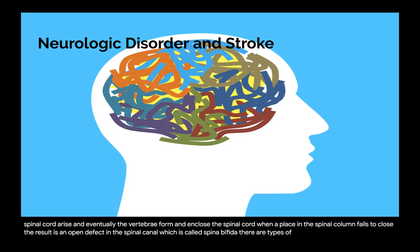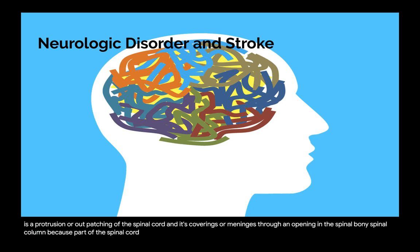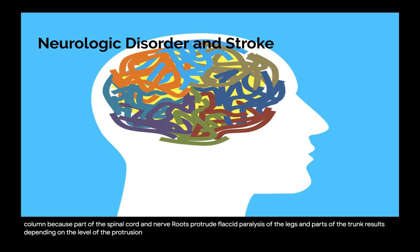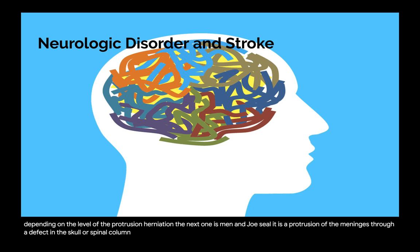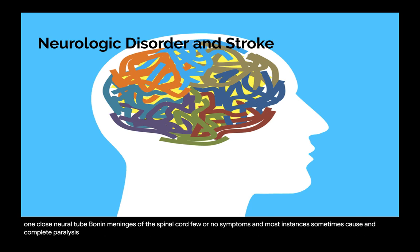Types of deformities include: myelomeningocele, a protrusion of the spinal cord and its coverings through an opening in the bony spinal column — because part of the spinal cord and nerve roots protrude, flaccid paralysis of the legs and parts of the trunk results; meningocele, a protrusion of the meninges through a defect in the skull or spinal column with no neural elements contained in the protrusion, which can cause minor disabilities; and closed neural tube defect, malformations in fat, bone, and meninges that sometimes cause incomplete paralysis with urinary and bowel dysfunction.